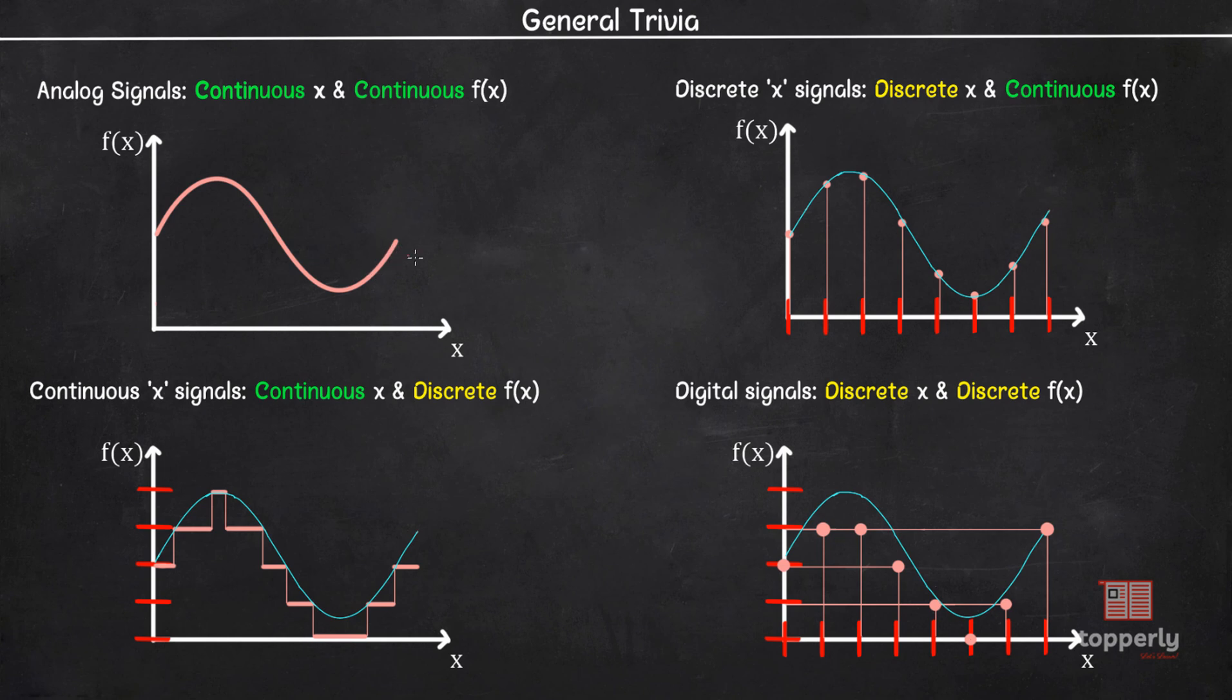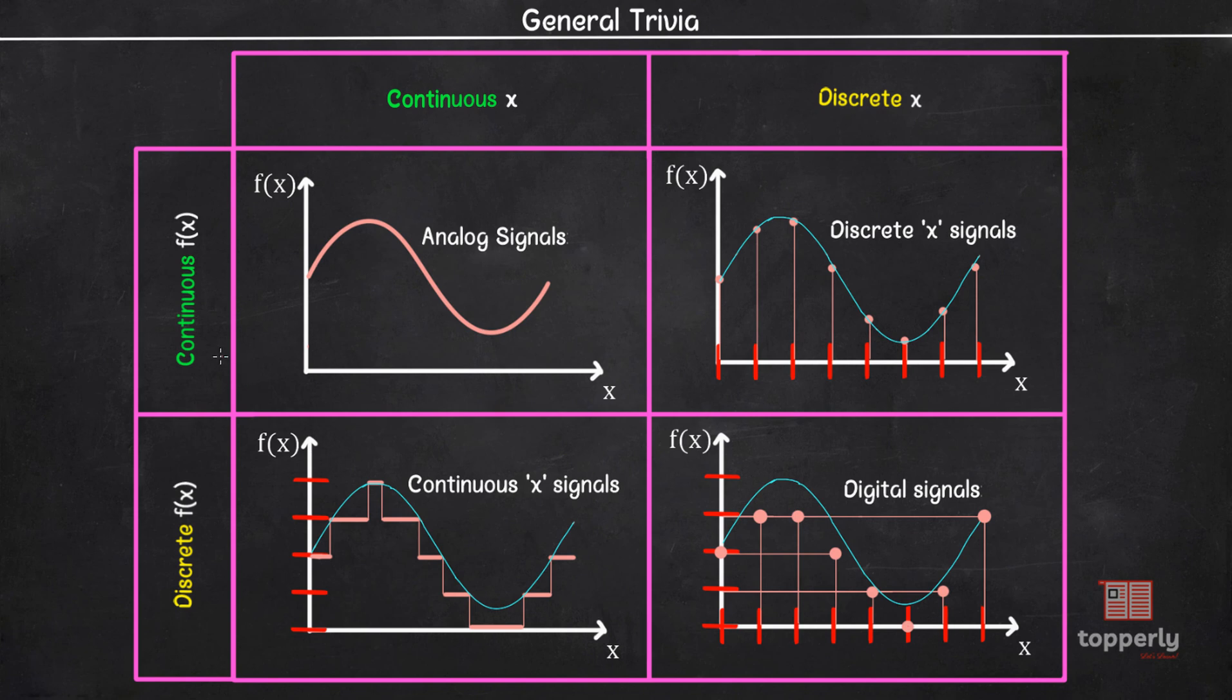Now for the purpose of remembering, let me show it in a matrix format. When f is continuous and x is continuous, we have analog signals. When f is continuous and we have discrete x, we have discrete x signals. When f is discrete and x is continuous, we have continuous x signals. And when f is discrete and x is discrete, we have digital signals.